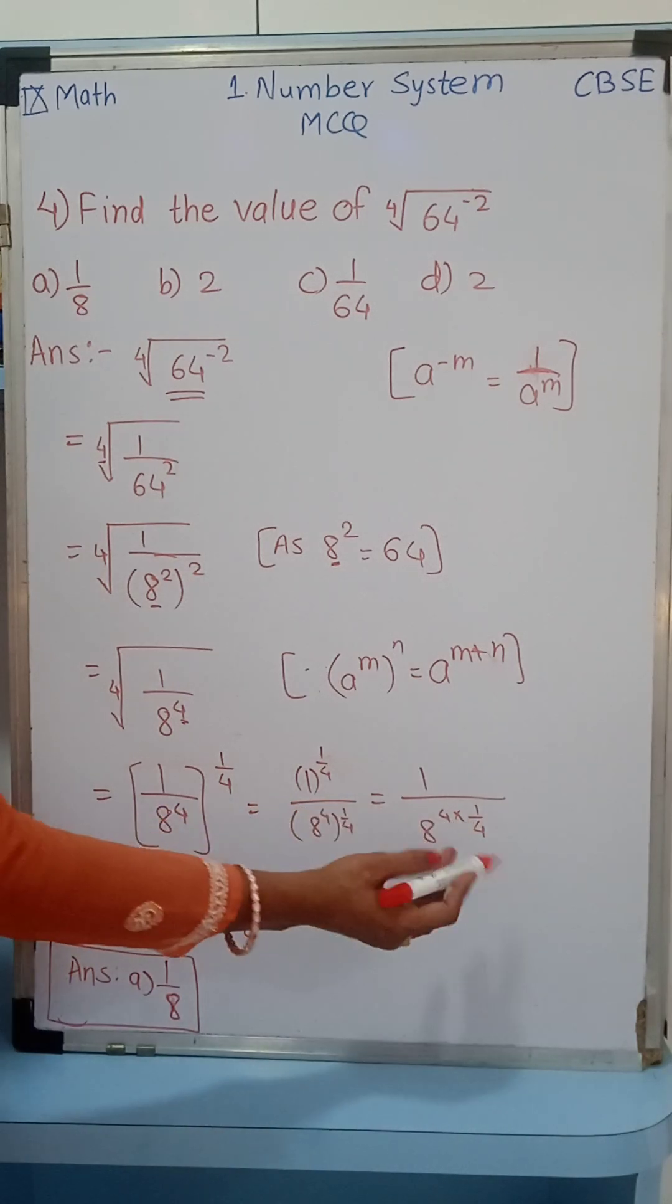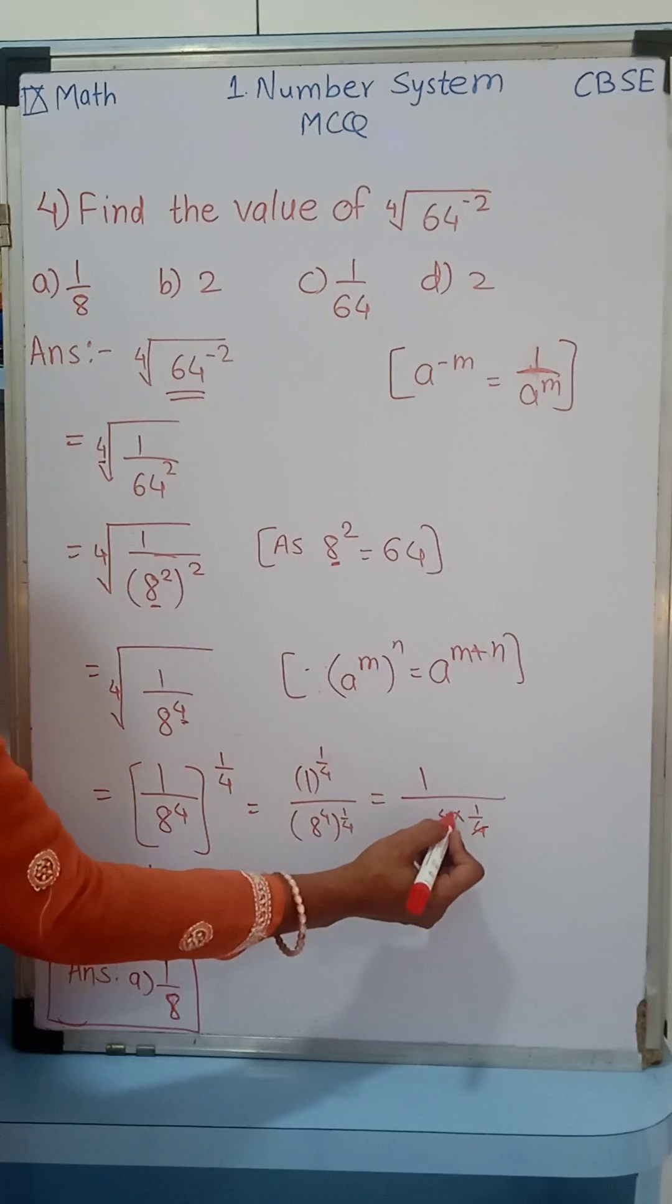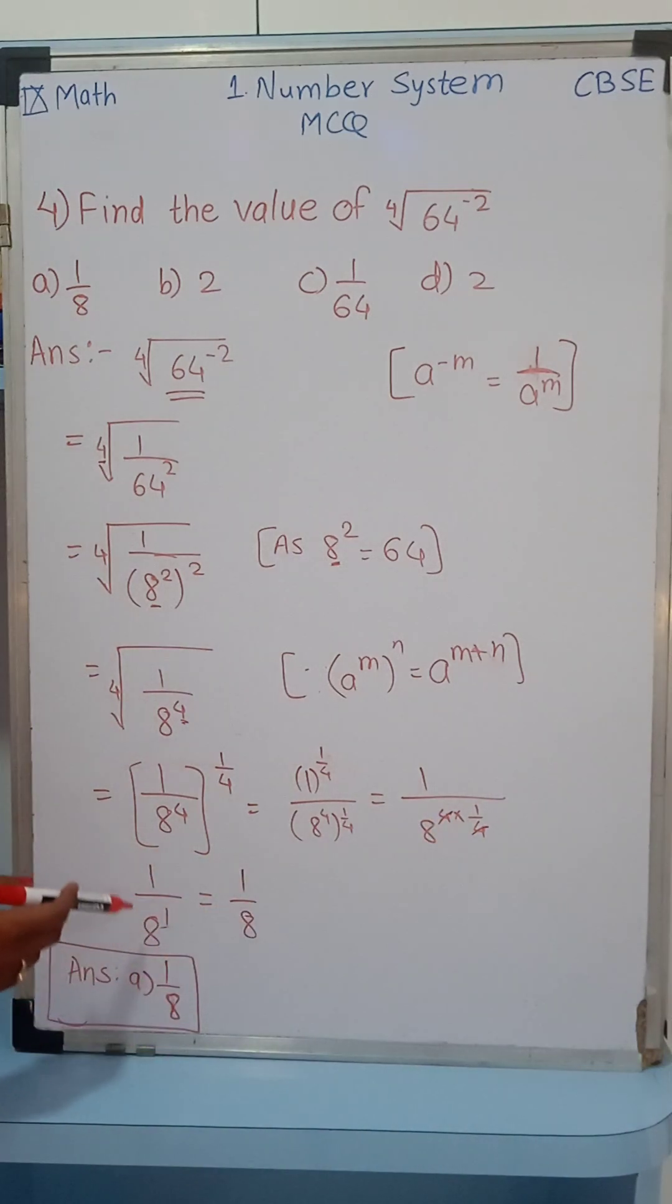So powers get multiplied, here 4 times 1/4, the 4s cancel each other. What is the meaning? 1 over 8 raised to 1, that is just 1/8, and therefore the answer is option A, that is 1/8.